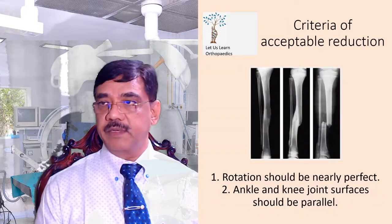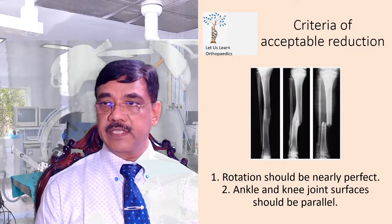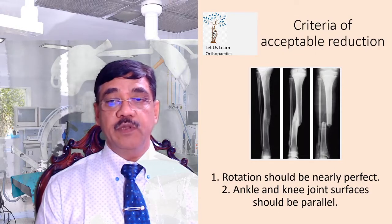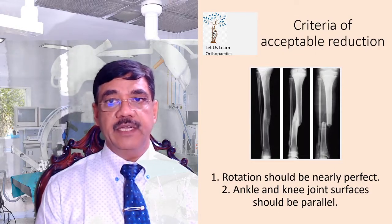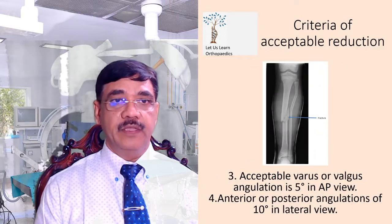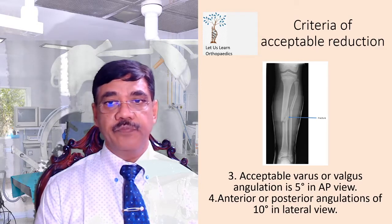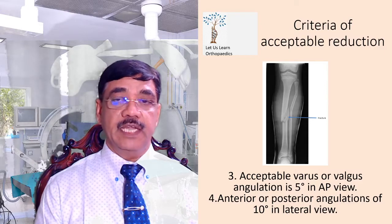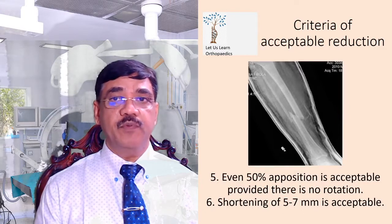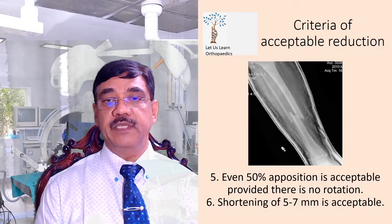The criteria for acceptable reduction: rotation should be nearly perfect, checked by AP and lateral x-ray of ankle and knee. In AP view, both ankle and knee should look AP; in lateral view, both should look lateral. The ankle and knee joint surfaces should be parallel. Acceptable varus and valgus angulation is 5 degrees in AP view, anterior or posterior angulation in lateral view should not exceed 10 degrees. Even 50% apposition is acceptable provided there is no rotation, and shortening of 5 to 7 mm is acceptable.